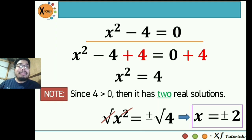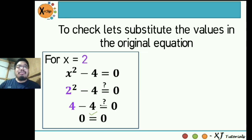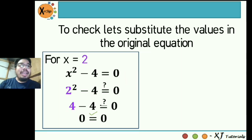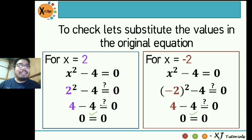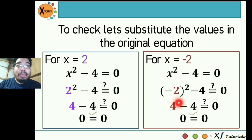These two values will satisfy your original equation. Let's do the checking. When x is equal to 2, we substitute into the original equation x squared minus 4 is equal to 0: 2 squared minus 4 is 4 minus 4 equals 0. So this is correct — this is a solution. How about negative 2? When x is negative 2: negative 2 squared is negative 2 times negative 2, which is positive 4. So 4 minus 4 is 0. So this is another solution. That's the reason why we have two real solutions.